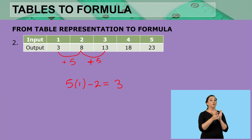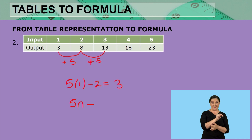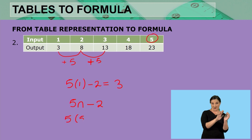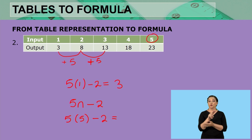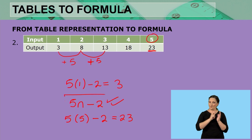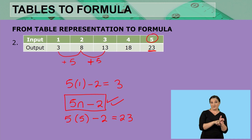So what is the rule for this representation? It would be 5n minus 2. Just to check: 5 multiplied by 5 — that fifth input — subtract 2 should give us 23. And 5 multiplied by 5 is 25; subtract 2 gives us 23. So we are absolutely correct that the rule is 5n minus 2.